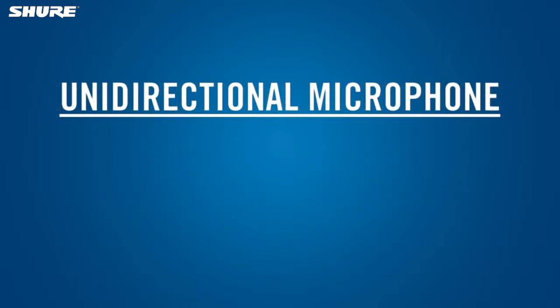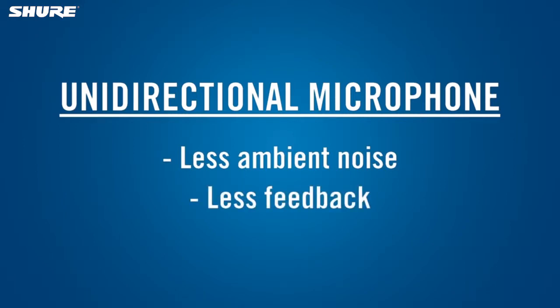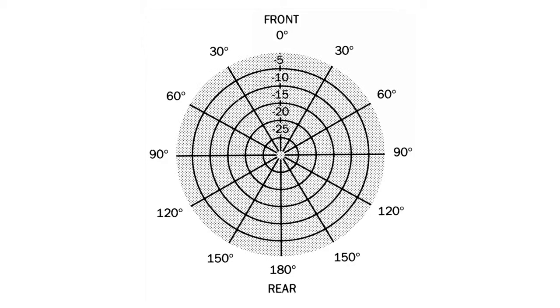A unidirectional microphone is most sensitive to sound coming from one direction. A unidirectional mic picks up less ambient noise than an omnidirectional type and is less susceptible to feedback when used with a sound system. The most common unidirectional pattern is the cardioid, which is so named because it resembles a heart.